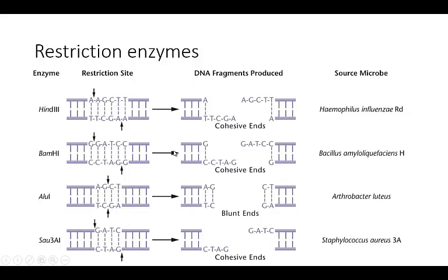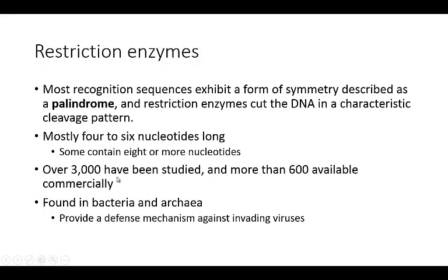Most of these enzymes are going to have recognition sites of about 4 to 6 nucleotides. These are probably two of the most commonly used for cloning techniques. You want something specific for your cut site — if the recognition site is too small it might cut at unexpected areas, and you don't want it to be too long either as that can be cumbersome for cloning.